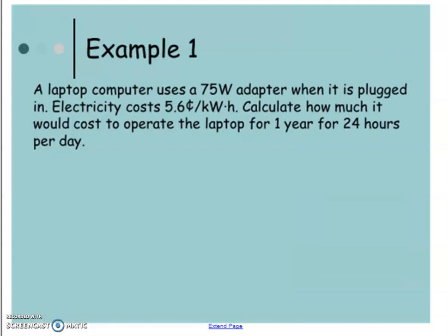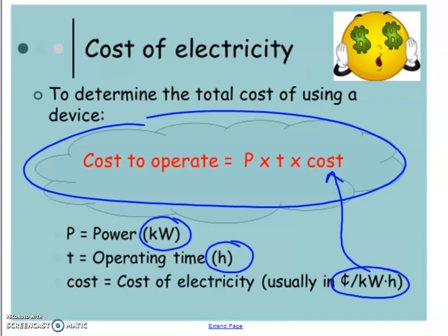So let's take a look at some questions here. We have a laptop computer uses 75 Watts when it is plugged in, electricity costs 5.6 cents per kilowatt hour. How much would it cost to operate the laptop for one year, assuming 24 hours a day? So this laptop is working hard one year, 24 hours a day. So let's write down all the things we're given. So we have the power, power is 75 Watts.